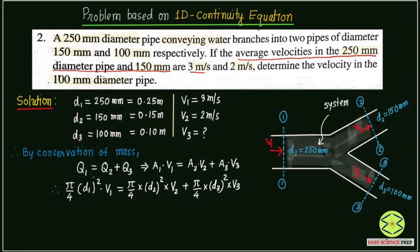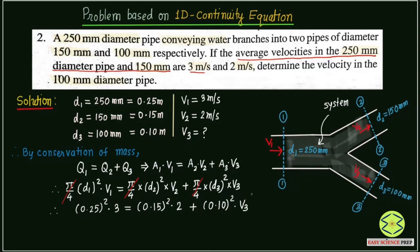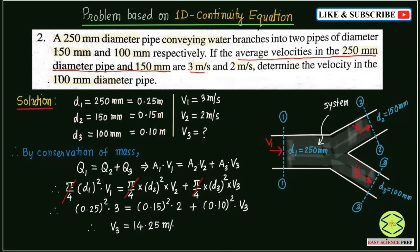Since π/4 appears in all terms, we can cancel it out, leaving only diameter squared times velocity. Substituting the values: (0.25)²×3 = (0.15)²×2 + (0.1)²×V3. This is an equation in one unknown, V3. Solving this equation gives V3 = 14.25 meters per second.